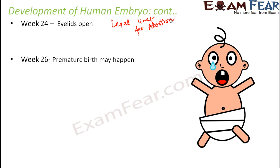By week 26, premature birth can happen, because most vital organs and body parts have already developed. If a baby is born by week 26, there are some chances of survival. If born before week 26, there are no chances of survival. By week 28, the baby responds to touch — if you touch a pregnant woman's tummy, the baby would respond. The baby also responds to loud sounds in the surroundings.